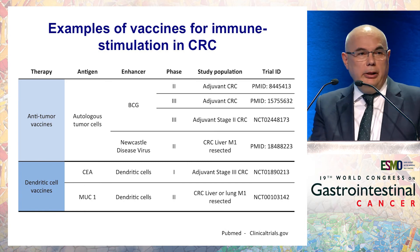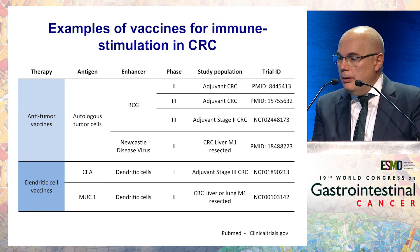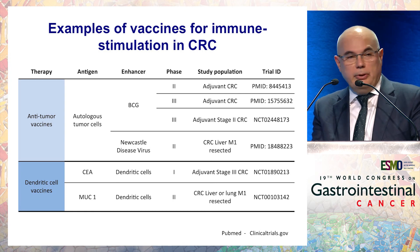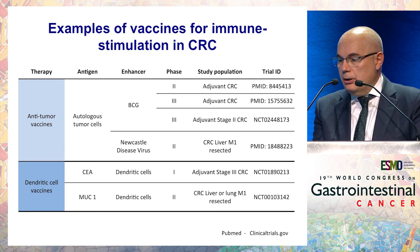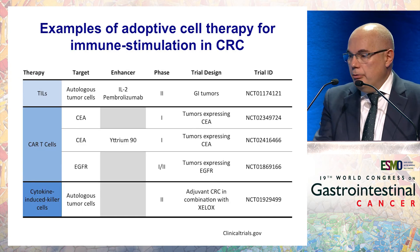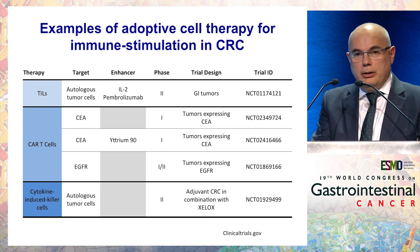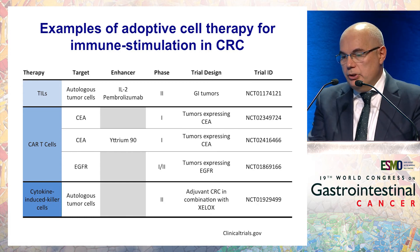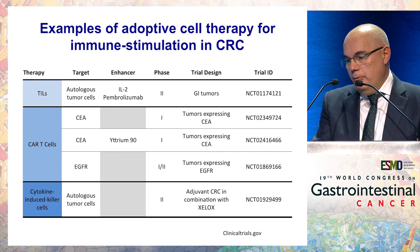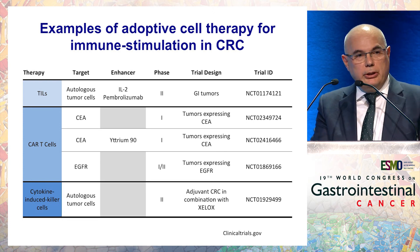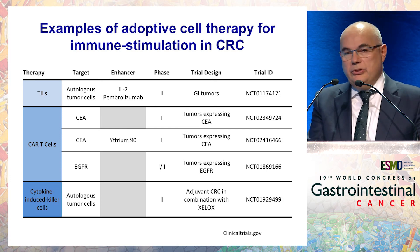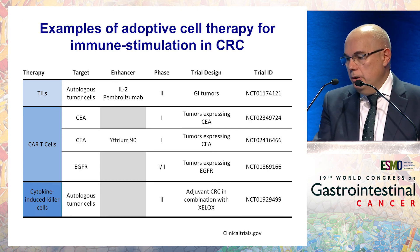Other approaches to engage the immune cycle in patients with immune desert colorectal cancers include vaccines — anti-tumor vaccines or dendritic cell vaccines directed to proteins in the malignant cell such as CEA and MUC1. Another approach is adoptive cell therapy, including clinical trials with TILs, CAR T cells directed to CEA or EGFR, and cytokine-induced killer cells. These are small, ongoing trials and we have to wait for clinical activity data, but the important message is that we are trying to engage the immune response in these immune-naive patients.